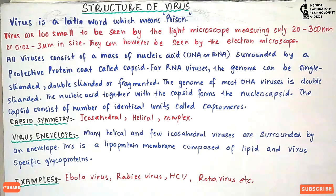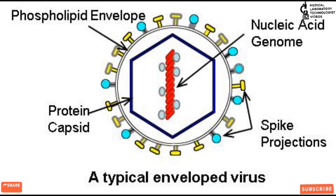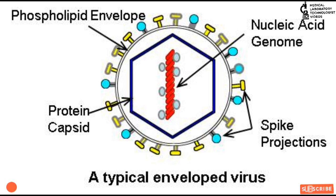Now I will show you the diagram of virus structure. In this diagram you will see the nucleic acid genome in the center, surrounded by the protein capsid, which is then surrounded by the envelope. In the envelope you will see the spike projections, which are the glycoproteins — the antigens. This illustrates the basic structure: nucleic acid surrounded by capsid made up of capsomeres, and a phospholipid envelope surrounding the capsid.